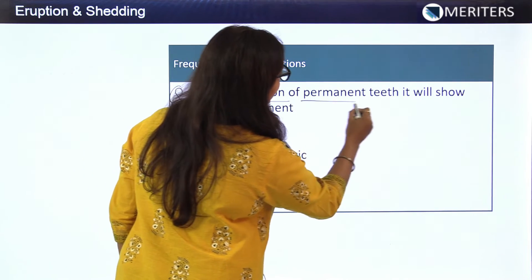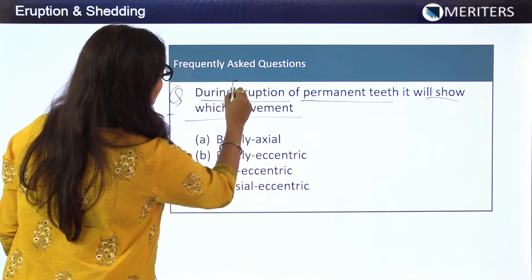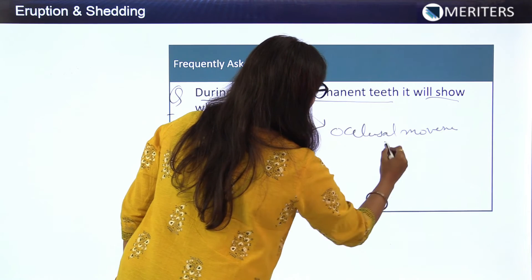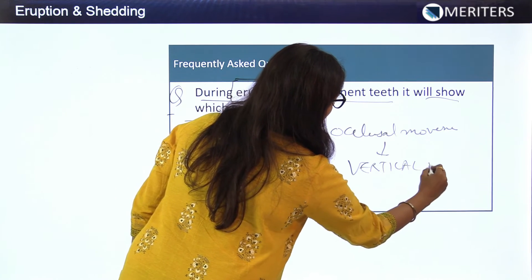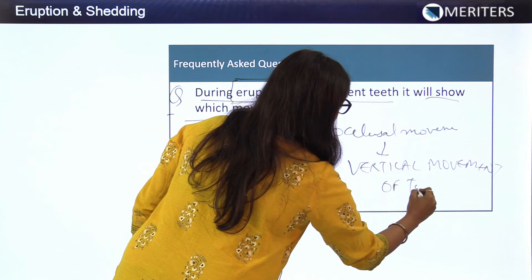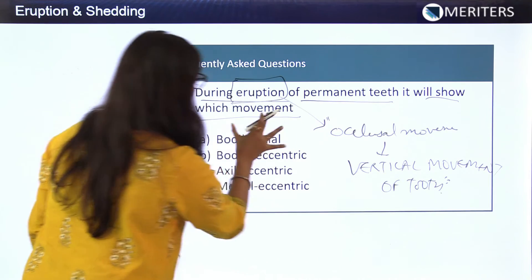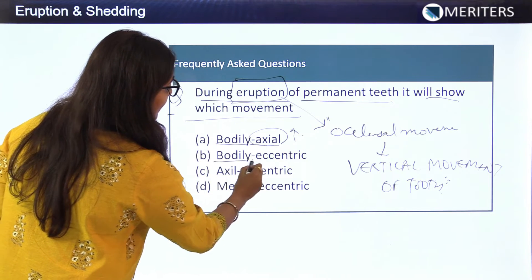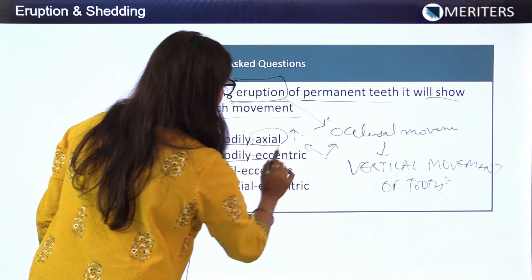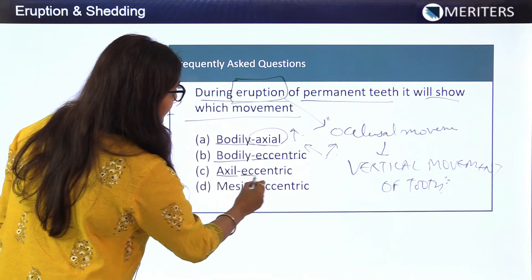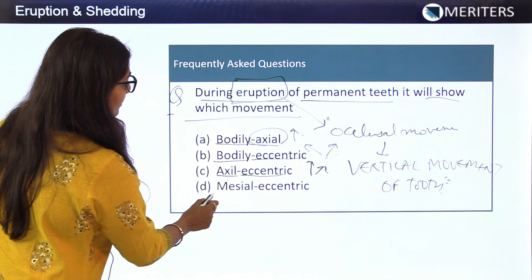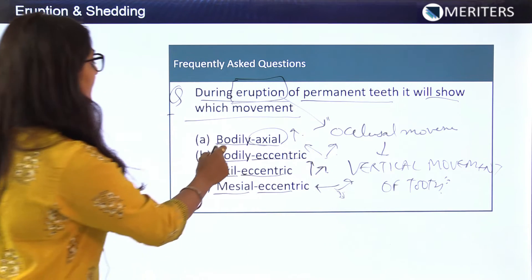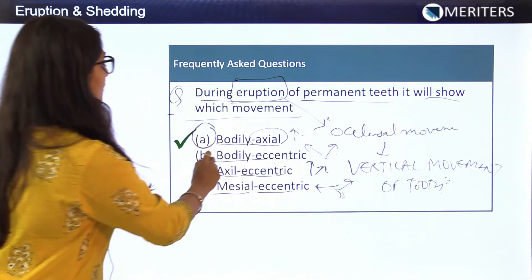A frequently asked exam question: during eruption of the permanent teeth, which movement is shown? As defined, eruption is the occlusal movement, also called vertical movement of the tooth. Looking at the options — (a) bodily and axial, where axial means vertical/occlusal; (b) bodily and eccentric, where eccentric means any direction away from occlusion; (c) axial and eccentric. The closest option is A — bodily and axial — which is the correct answer.